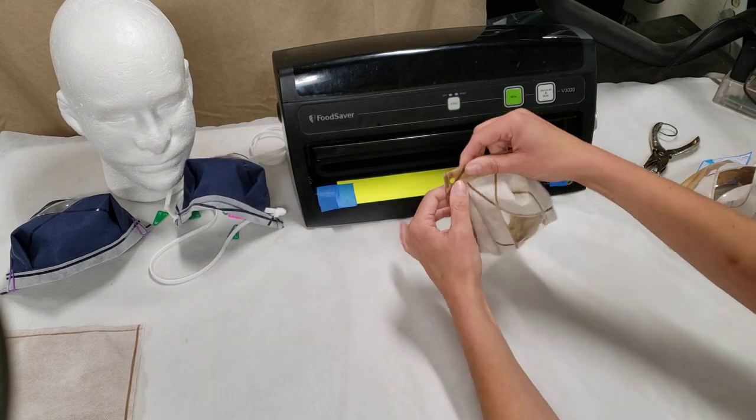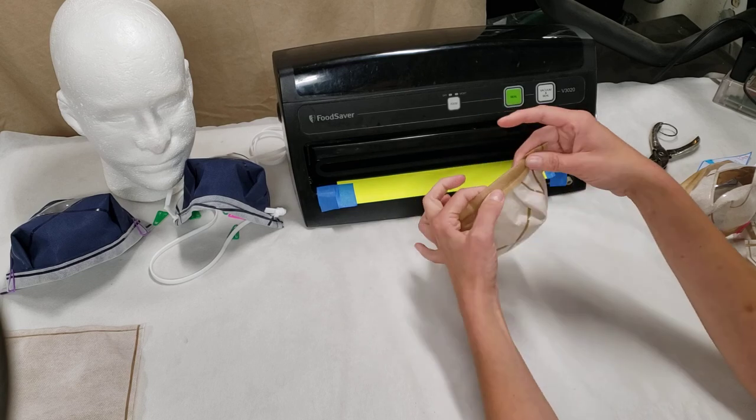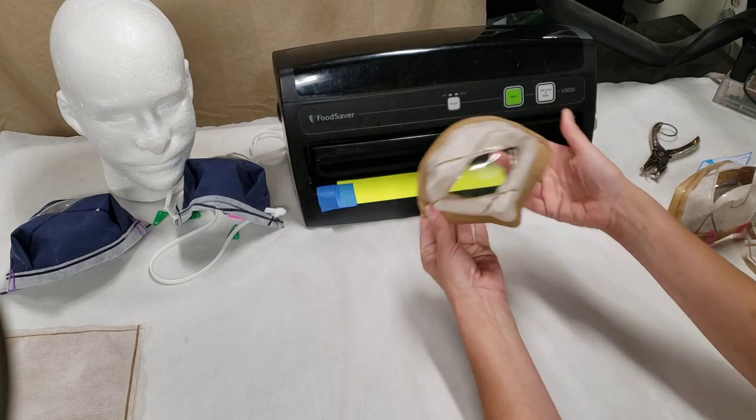If you're sewing instead of doing all those extra heat sealed steps to set the pleats you just sew the single stitch line along the bottom.